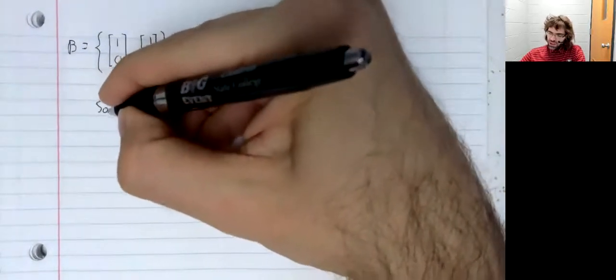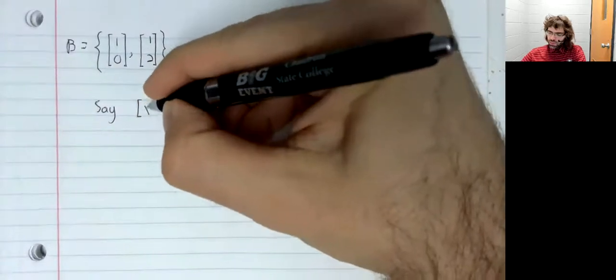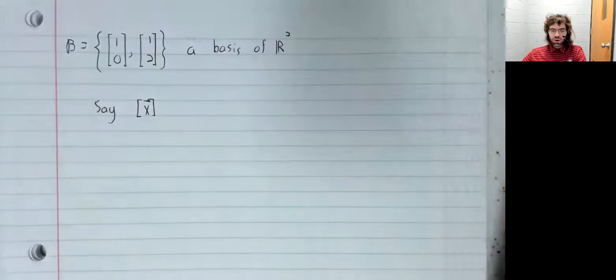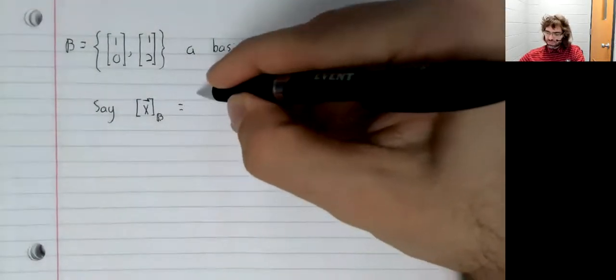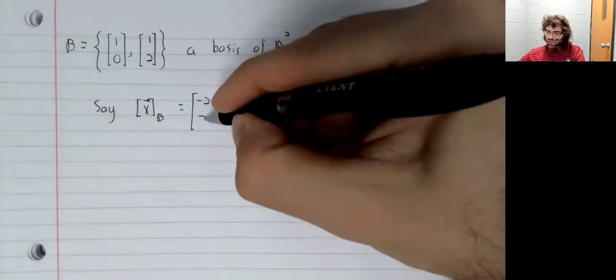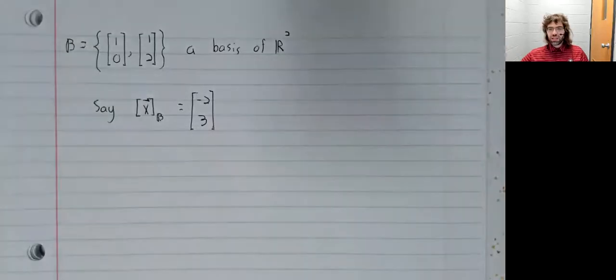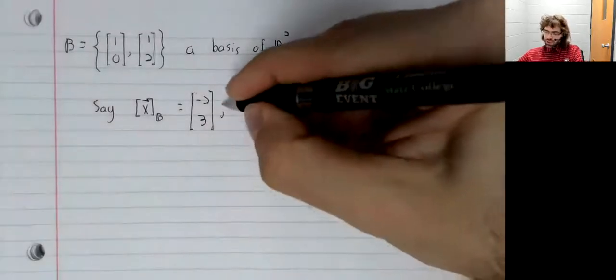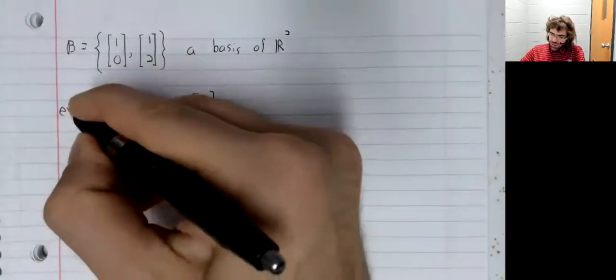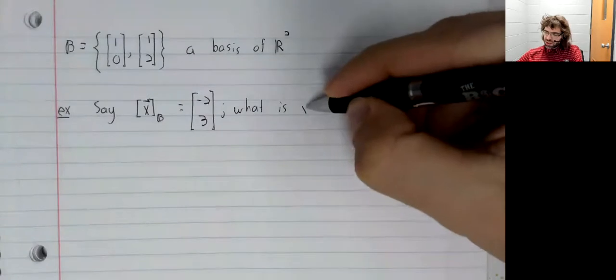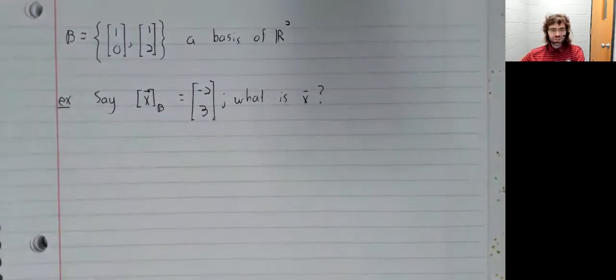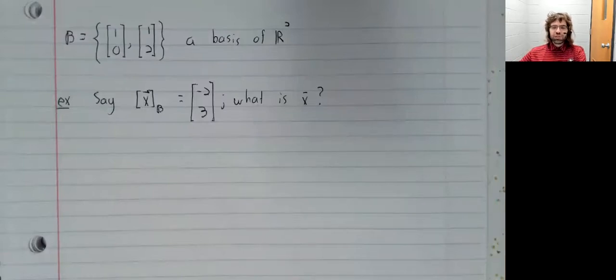Say that we're told that the coordinate vector of x with respect to this basis is negative 2, 3. And the question we'll ask in this example is what is the vector x? This example is very plug and play. It's really just testing whether you have this definition down.